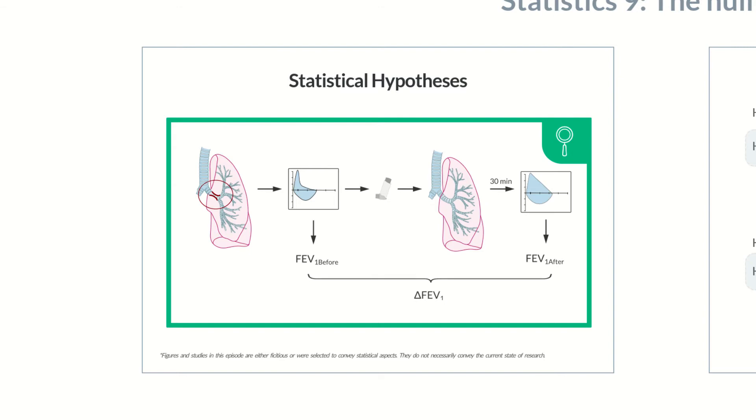From the difference between these two values, the change in the volume of air forcibly expired in one second is measured and therefore can indicate a potential decrease in obstruction and effective bronchodilation.